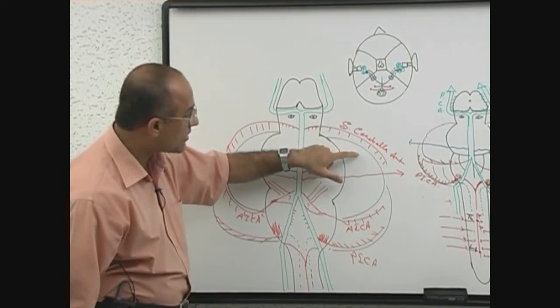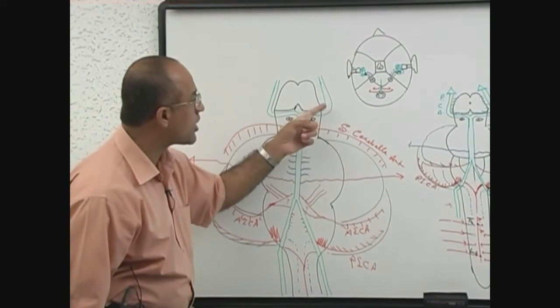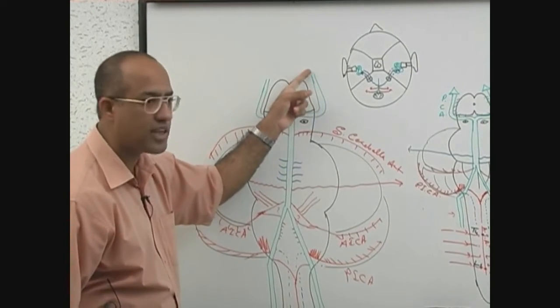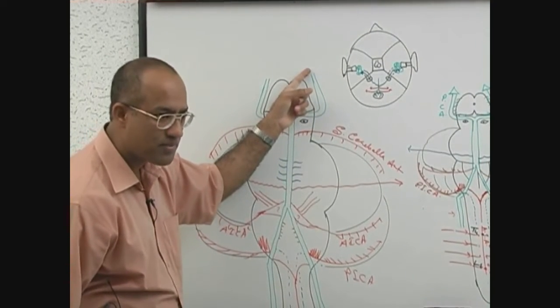This is superior cerebellar artery, this is posterior cerebral artery, this is for cerebellum, that is for posterior part of cerebrum, right.